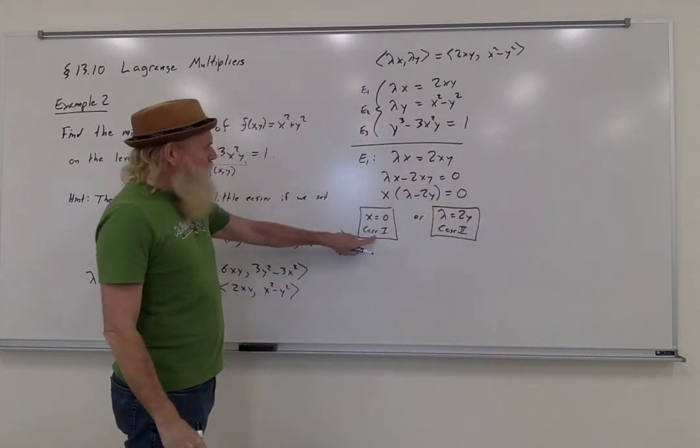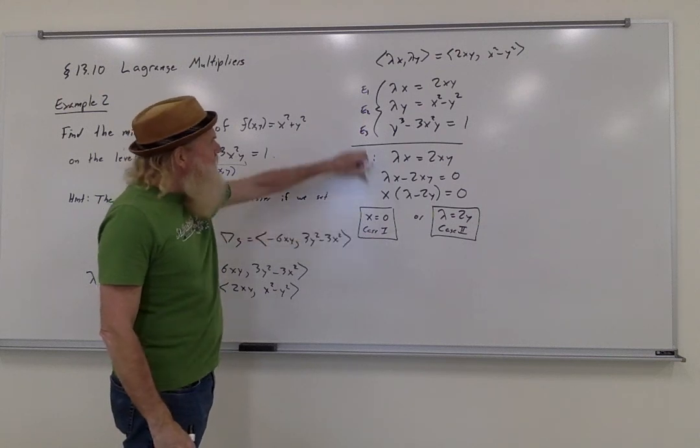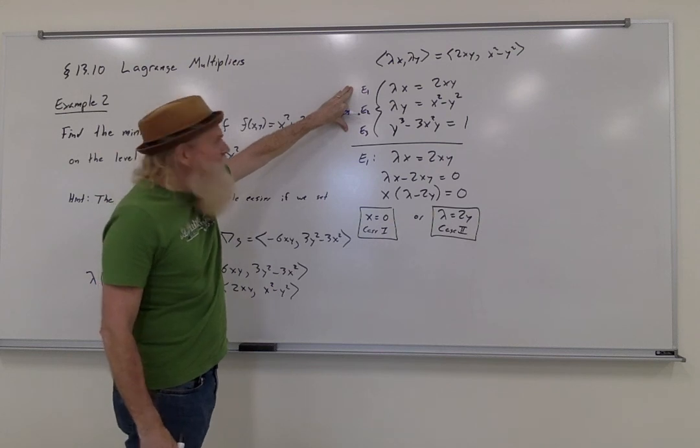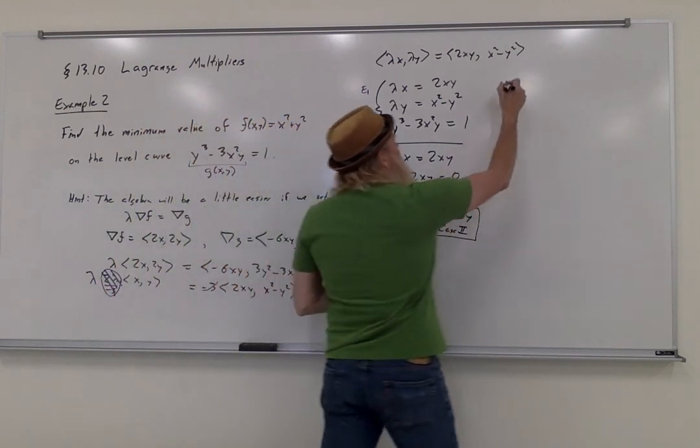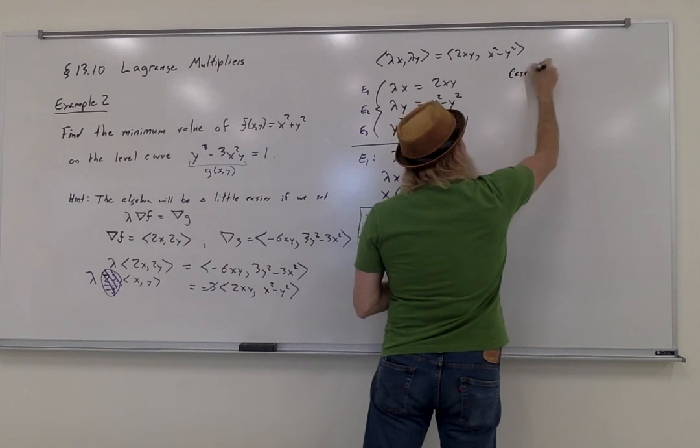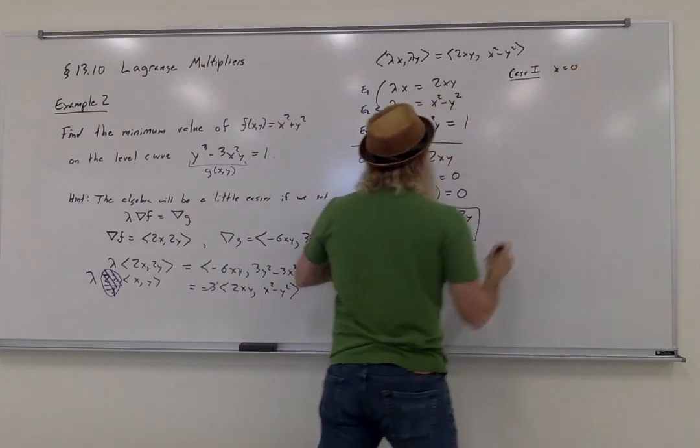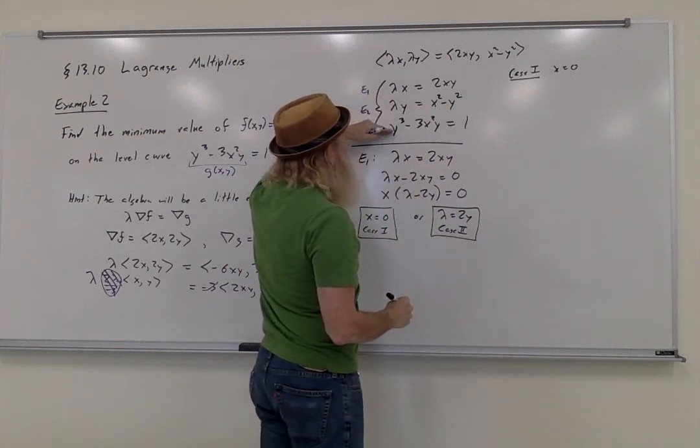So one at a time, we're going to take the information from the case, substitute it back into equations 1 through 3, and solve what we hope is going to be a simpler system. So let's look at case 1 first. I'm going to take x equals 0, and substitute it into equations 1, 2, and 3.